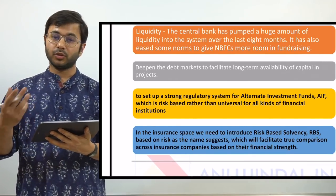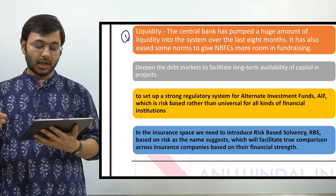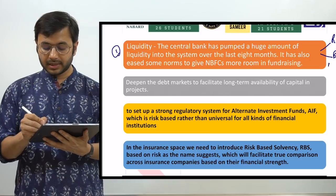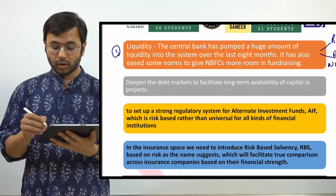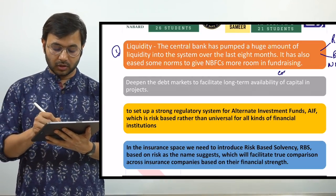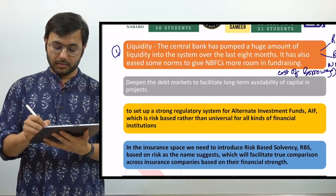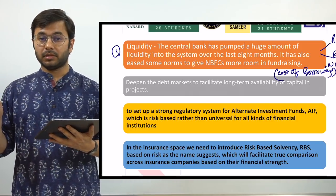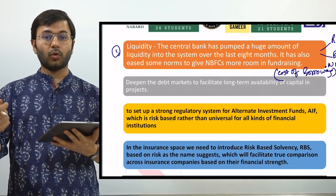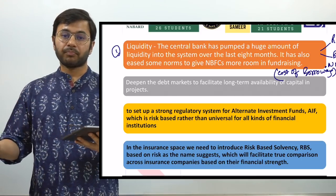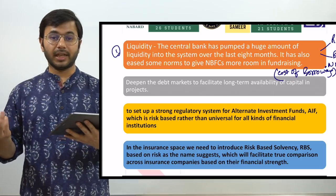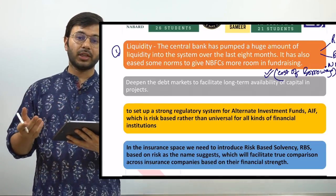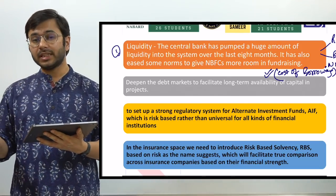Now, what are the solutions? Number one is to increase liquidity in the system. There is a controversy here: the RBI says liquidity is sufficient, but banks and NBFCs say there is not enough liquidity. When liquidity is less, the cost of borrowing is more because money is more valuable. For example, if there is only 50 rupees in the market instead of 100, whoever holds it will lend at 10 percent rather than 5 percent. NBFCs argue that liquidity in the system is still insufficient.